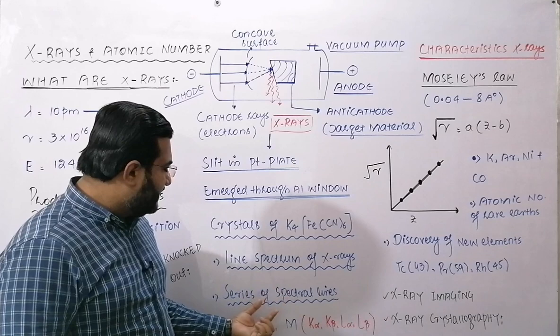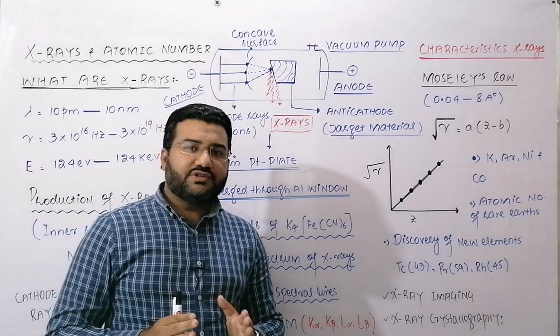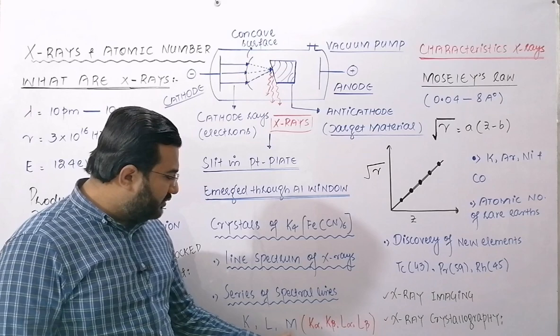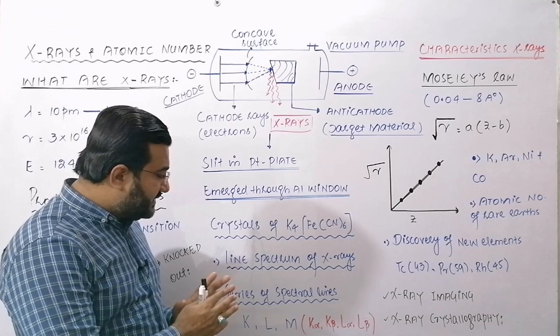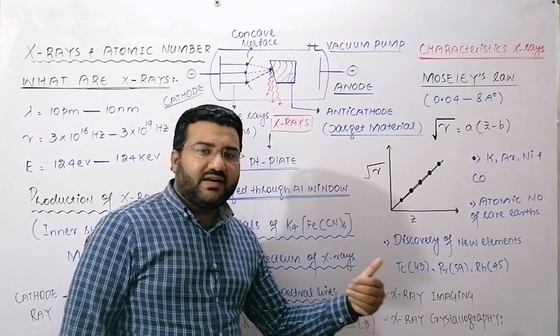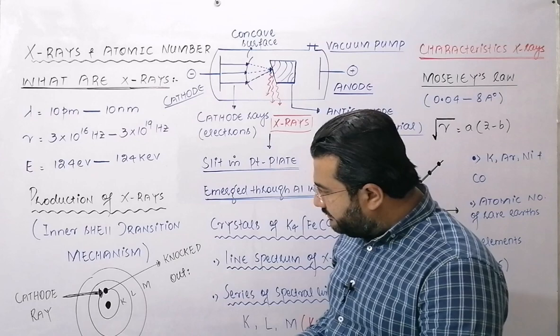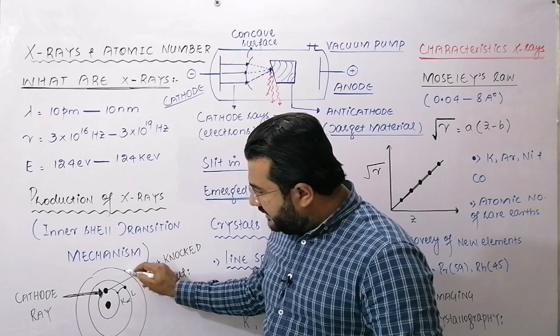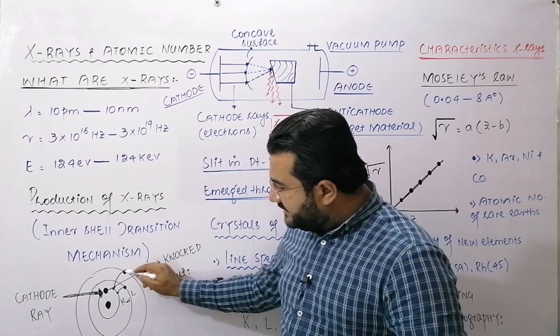In the line spectrum of X-rays, there are different series of spectral lines. The K-series is the most energetic and is produced when an electron from the K-shell is knocked out. The L-series is produced when the L-shell electron is knocked out, and the M-series when the M-shell electron is knocked out. These series consist of individual lines: K-alpha lines are produced when an electron from the L-shell moves to fill the vacancy in the K-shell; K-beta lines when an electron from the M-shell falls to the K-shell.